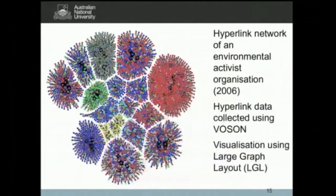Moving on to another early visualisation — third-party software I adapted for my purposes. This is a visualisation of a network from an environmental activist organisation, again a minimum spanning tree showing outbound hyperlinks. The colour coding is the generic top-level domain: reds are .com, blues are .org, et cetera. I found this visually appealing, but didn't get a lot of analytical insight from it.